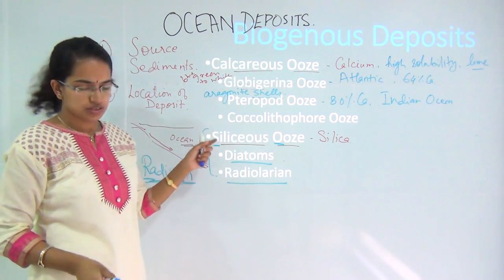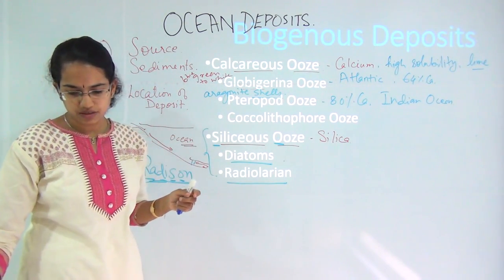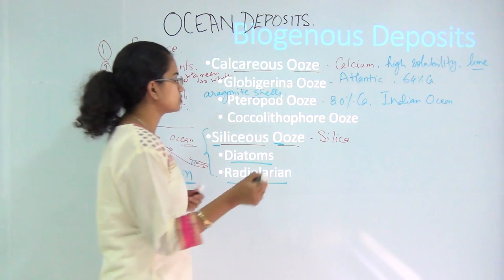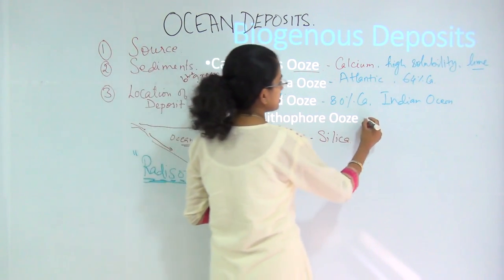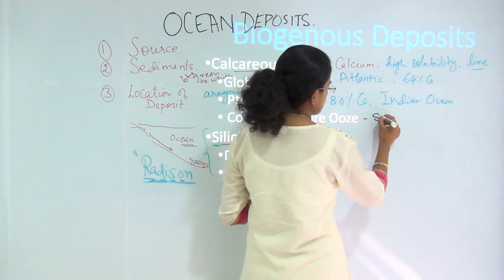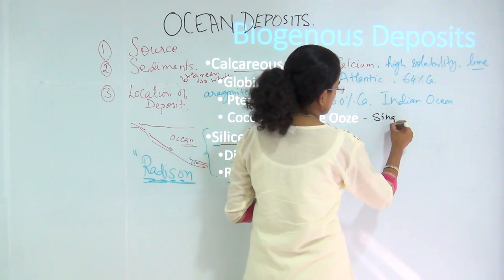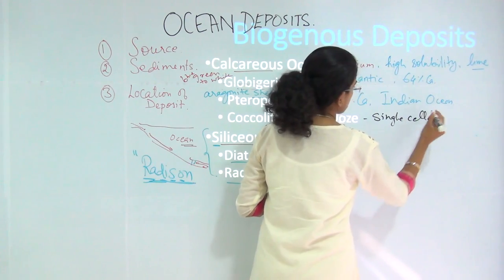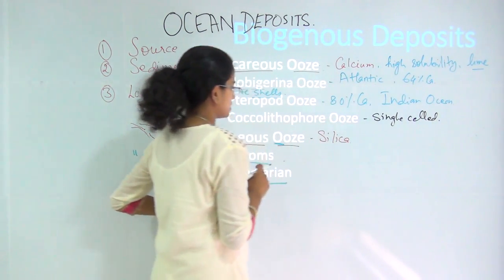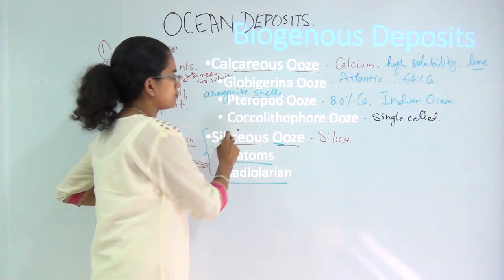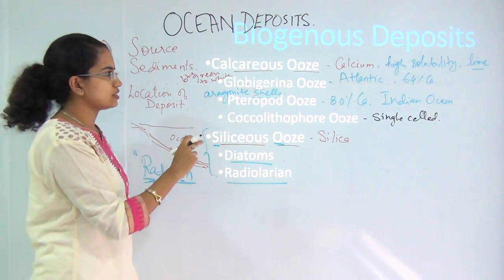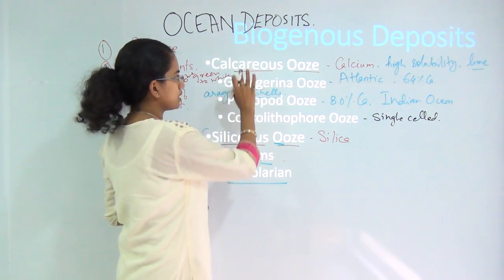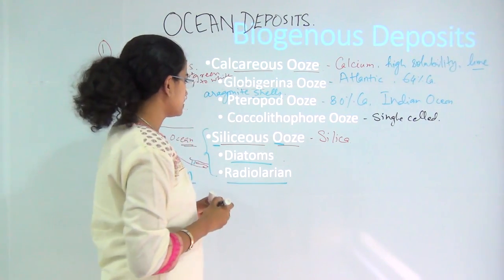Pteropods are mainly found in the Indian Ocean. Then finally, coccolithophores — these are fine, single-sided structures, very small. In very low percentages, coccolithophores are a part of calcareous ooze. Globigerina is the most common calcareous ooze, usually in a shade of blue-green to whitish tint.